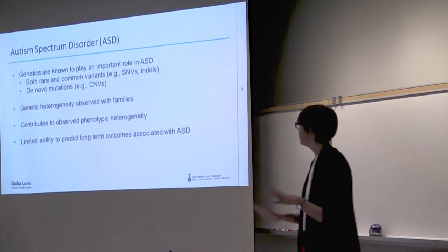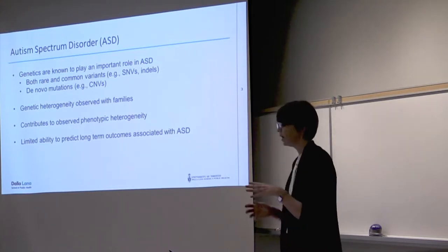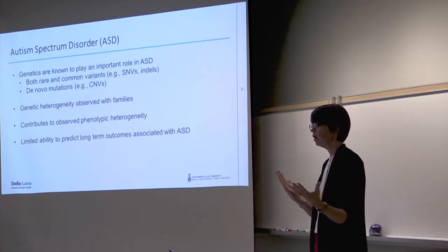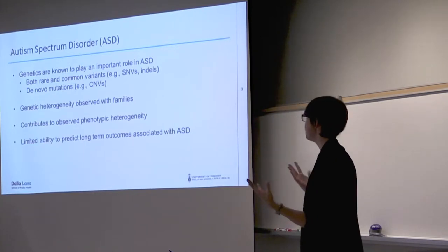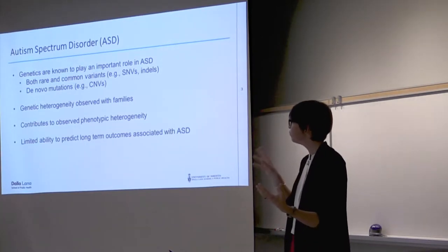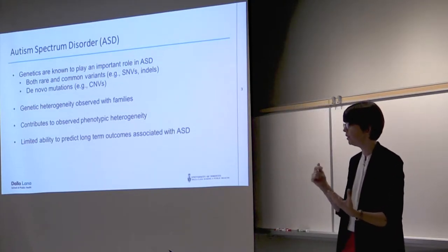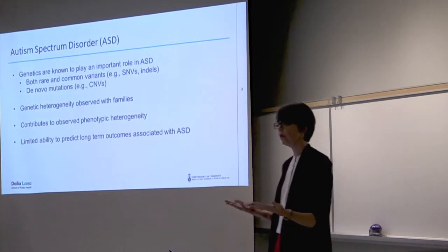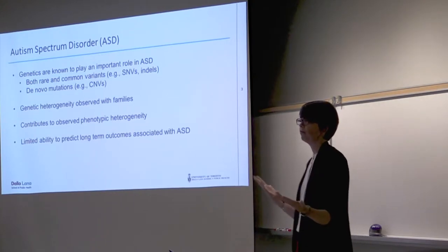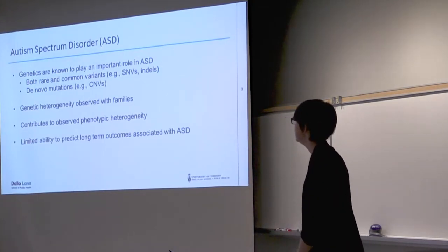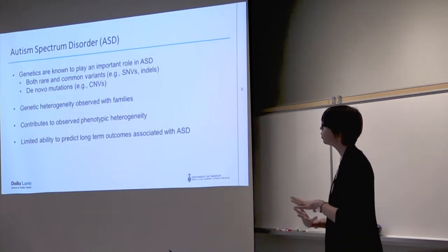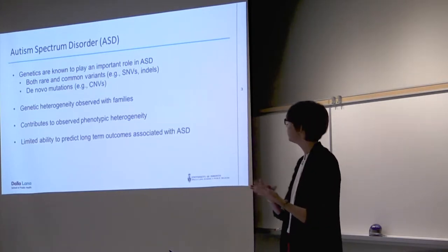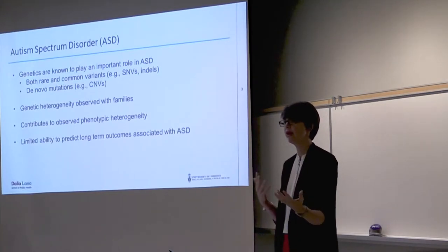Genetics are known to play a very important role in autism — it's highly heritable. The genetics, just like the condition itself, are also very heterogeneous. There are contributions from both rare and common variants, but there's also a significant component of de novo mutations and a lot of CNVs. There's also heterogeneity within families — siblings from the same family who are both affected can carry different putative variants associated with their autism. There's more work now showing that some of this genetic heterogeneity contributes to different diagnostic trajectories and different patterns of comorbidity.